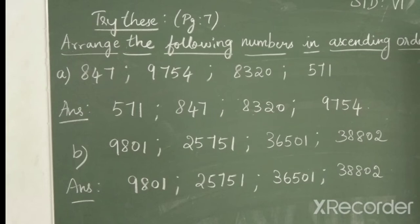Now, taking the 4-digit numbers 9754 and 8320, 8320 is the smaller number and then comes 9754.